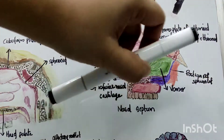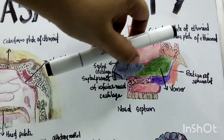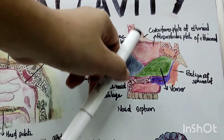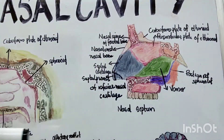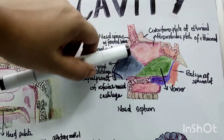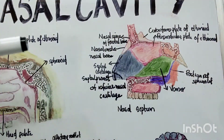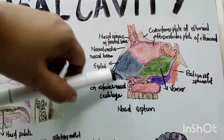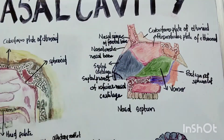The bony part is formed by the vomer bone and the perpendicular plate of the ethmoid. The borders are also contributed by the cribriform plate of the ethmoid, the nasal spine of the frontal bone, the nasal crest, and the rostrum of the sphenoid. The cartilaginous part is formed by the septal cartilage and the septal process of the inferior nasal cartilage.